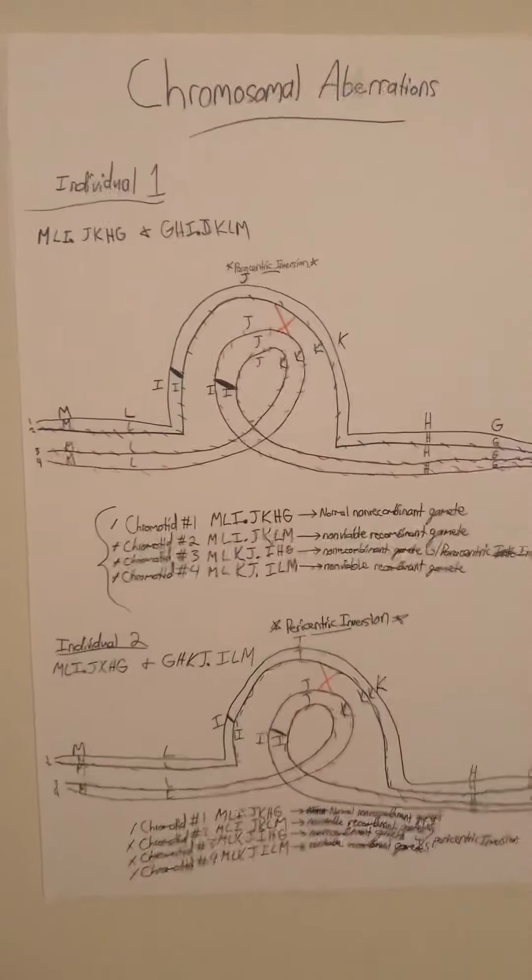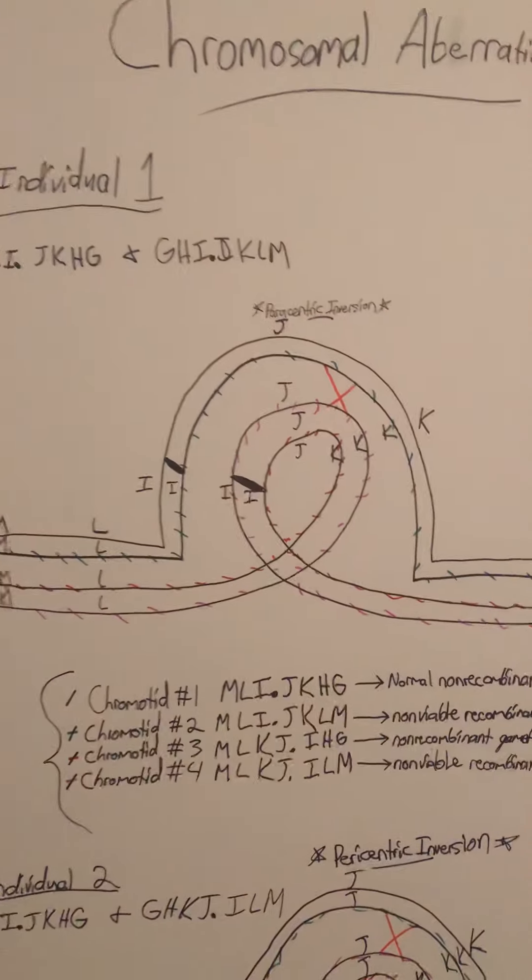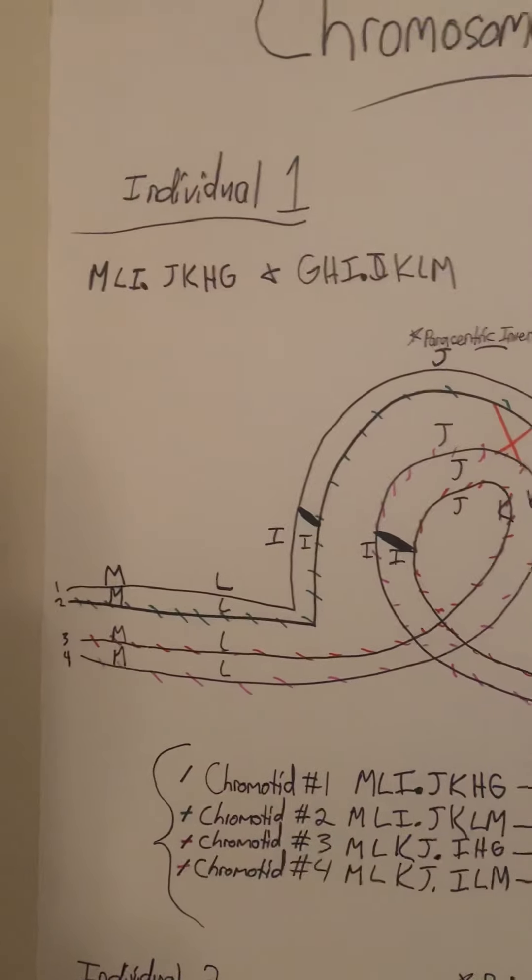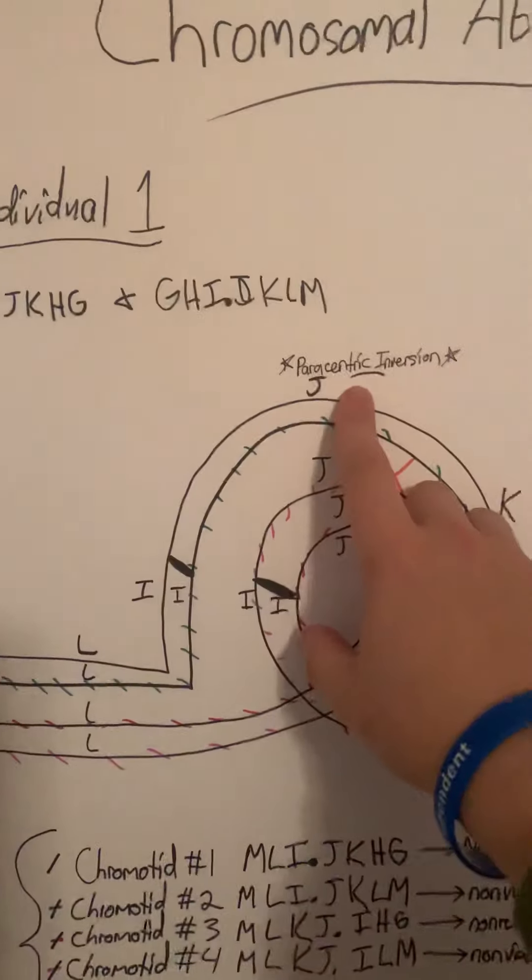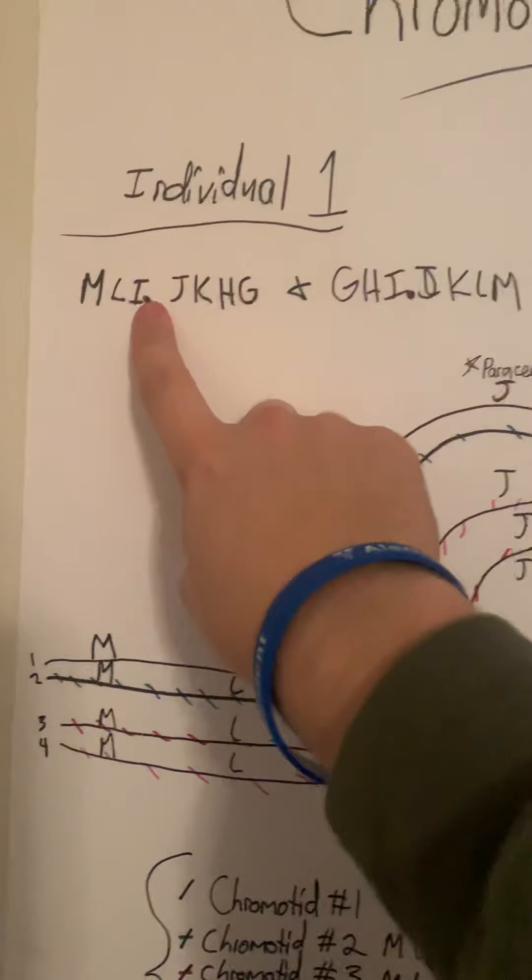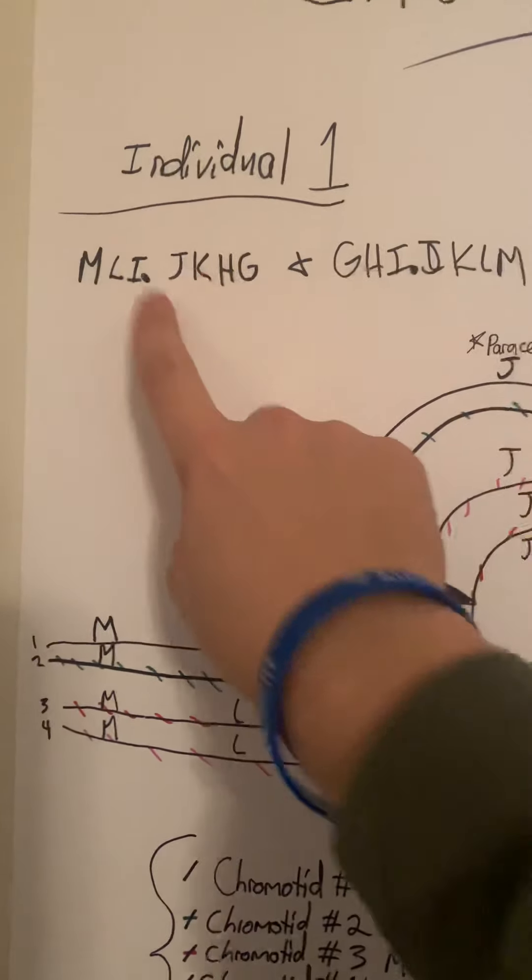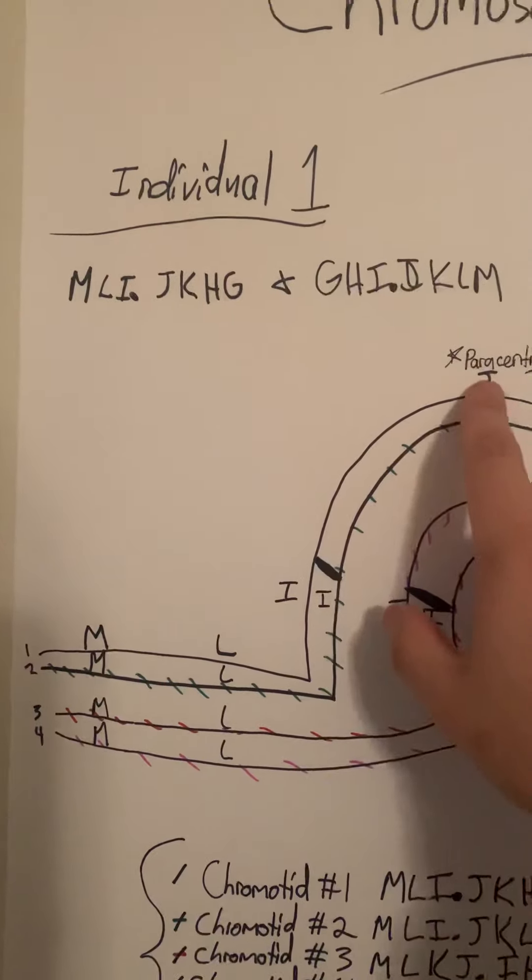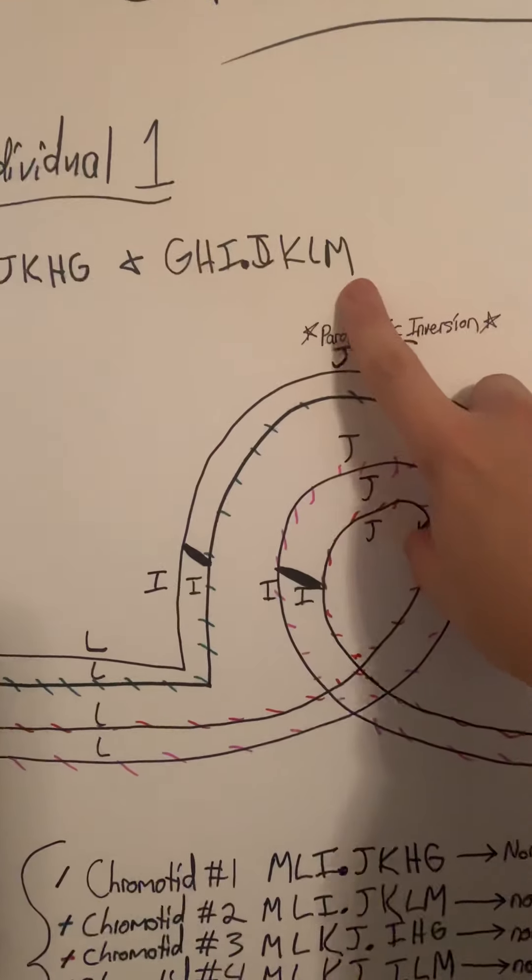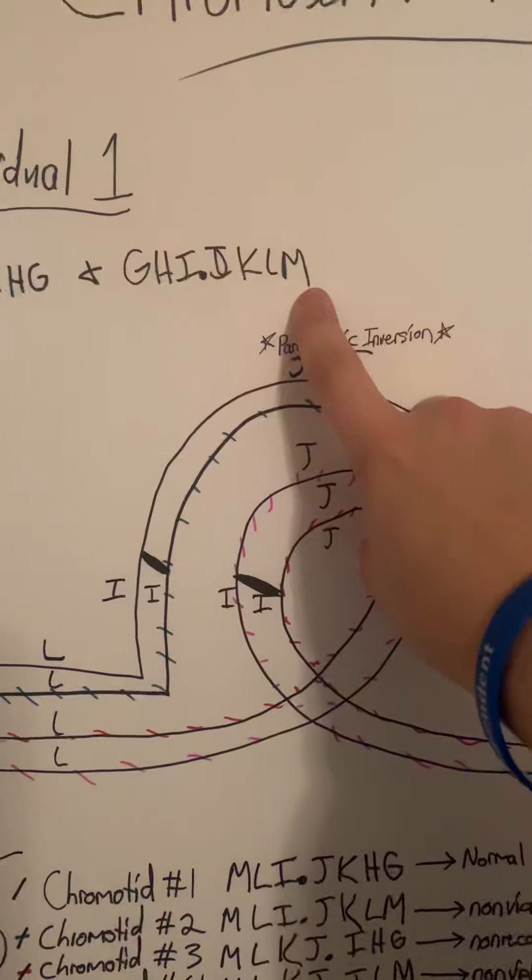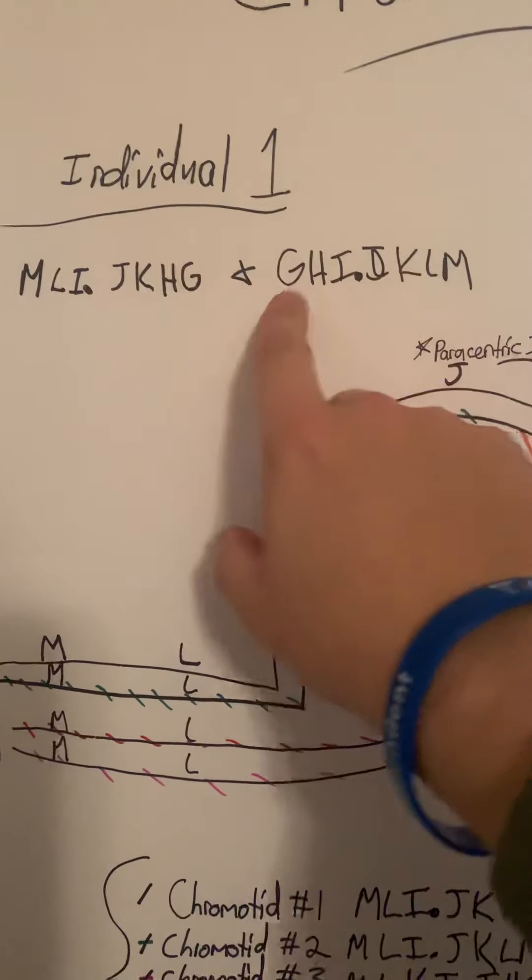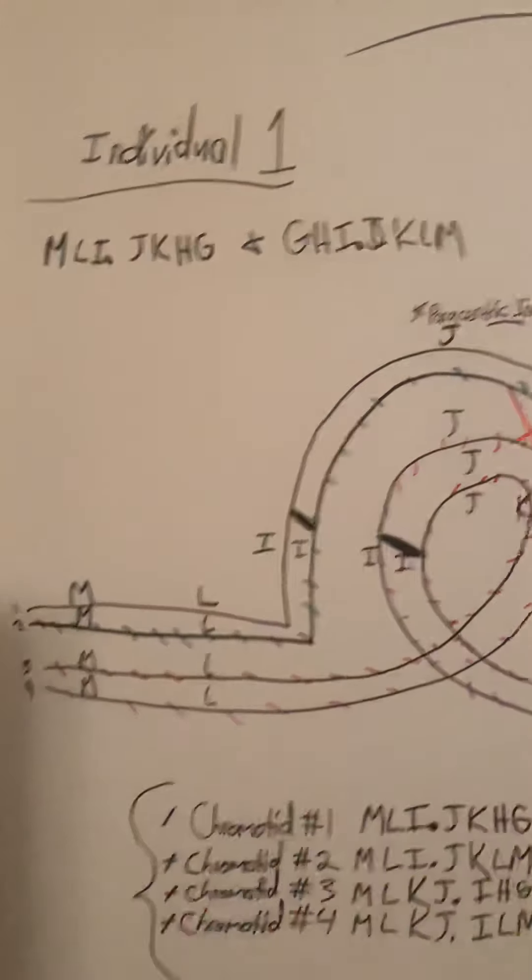As we look at the first individual, we can tell that this is a paracentric inversion crossover because paracentric means without the centromere. We see the centromere right here that's in the same position for both chromosomes. We know it's an inversion because the ML is in this position, whereas the L and M is in this position. Different locations, as well as the GH and HG—you can tell they're inverted.